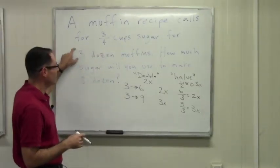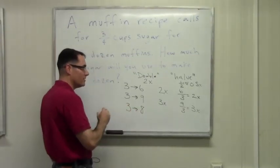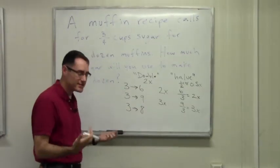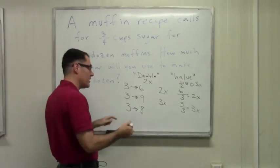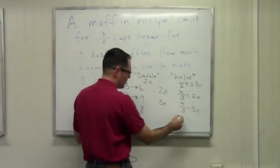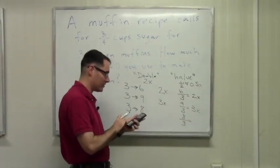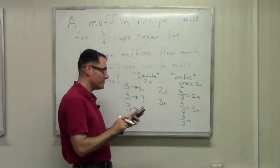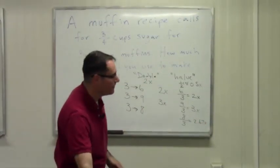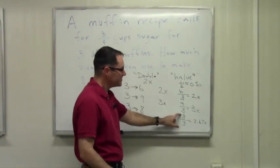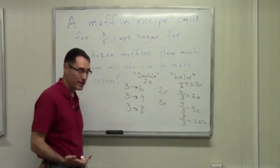Now let's look at our example: 3 dozen to 8 dozen. It's exactly the same pattern. We don't know this ratio implicitly — going from 3 dozen to 8 dozen isn't an even ratio. But using the same pattern, it's going to be 8 divided by 3, which gives you about 2.67. Let's leave it in fraction form: 8 thirds is the amount we're going to multiply by 3 quarters cups to get the final amount for the recipe.